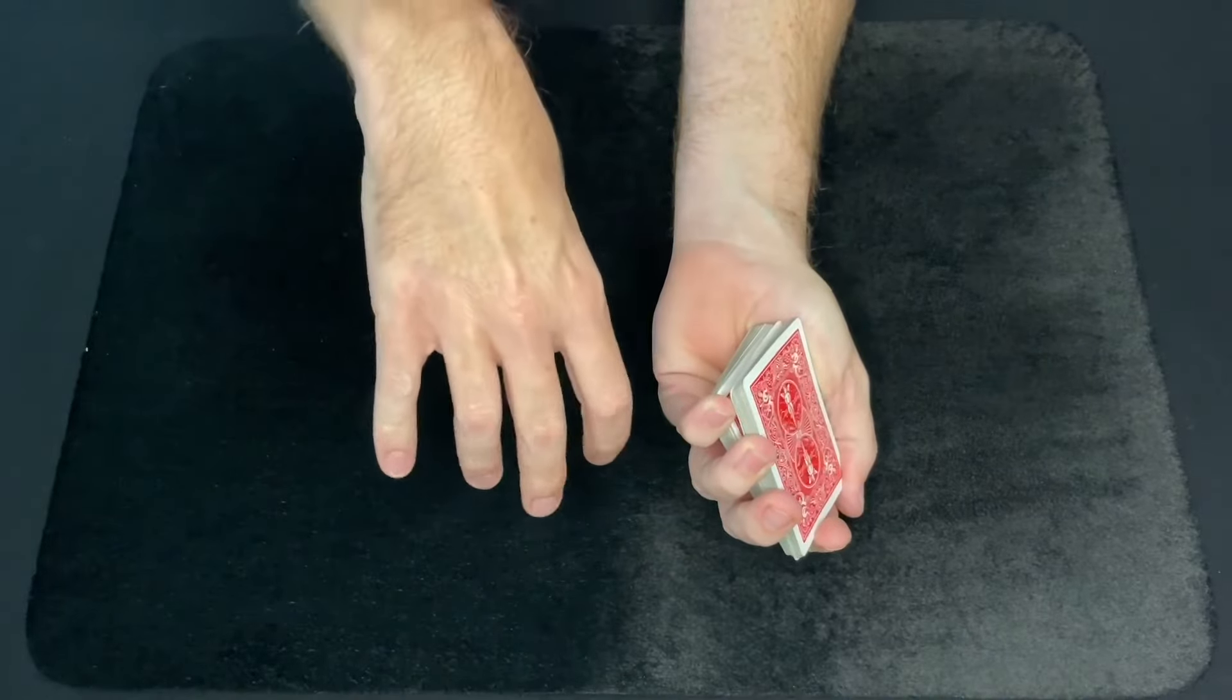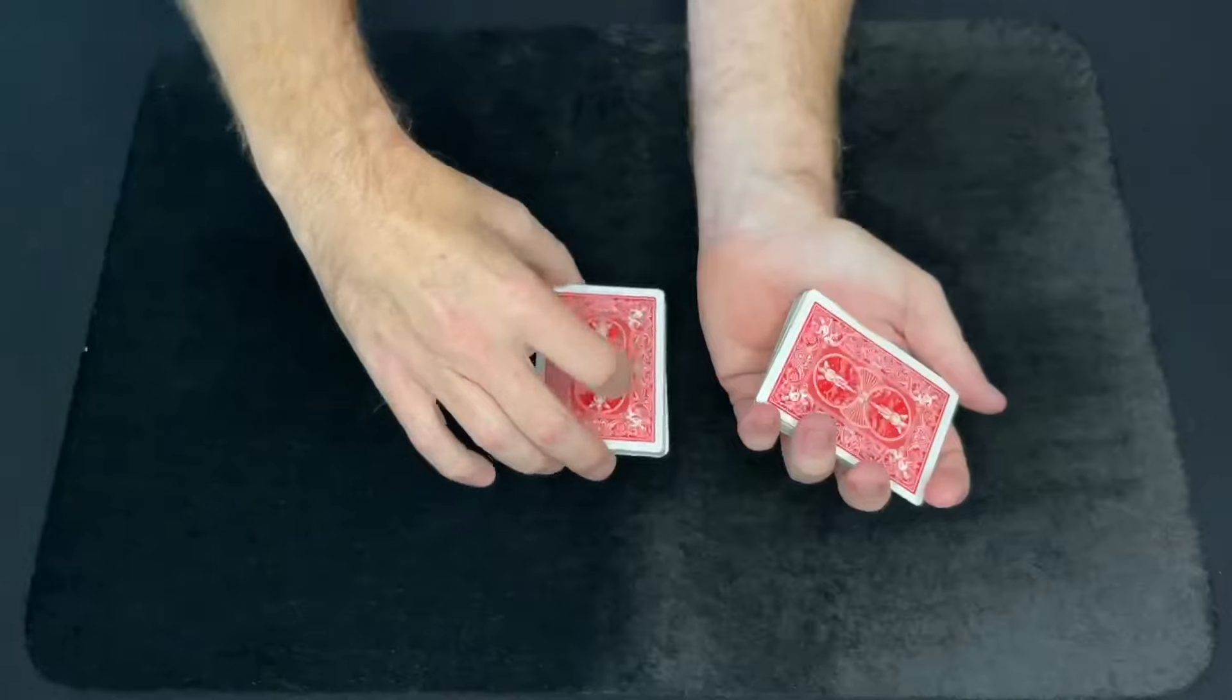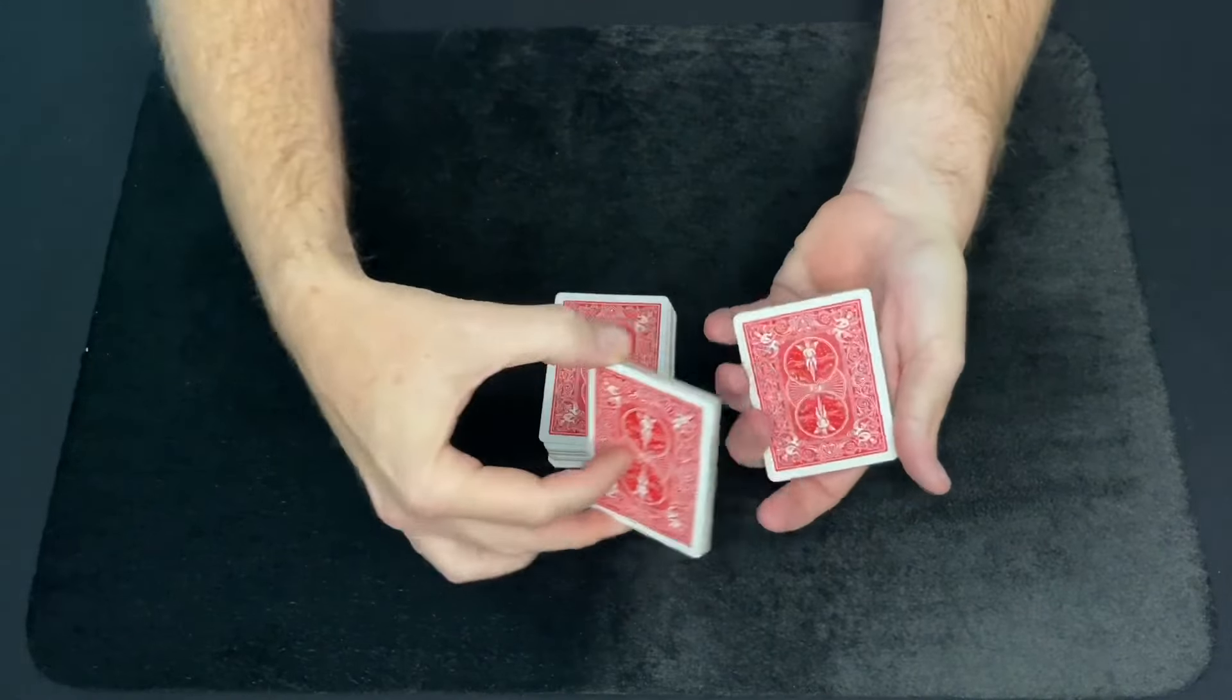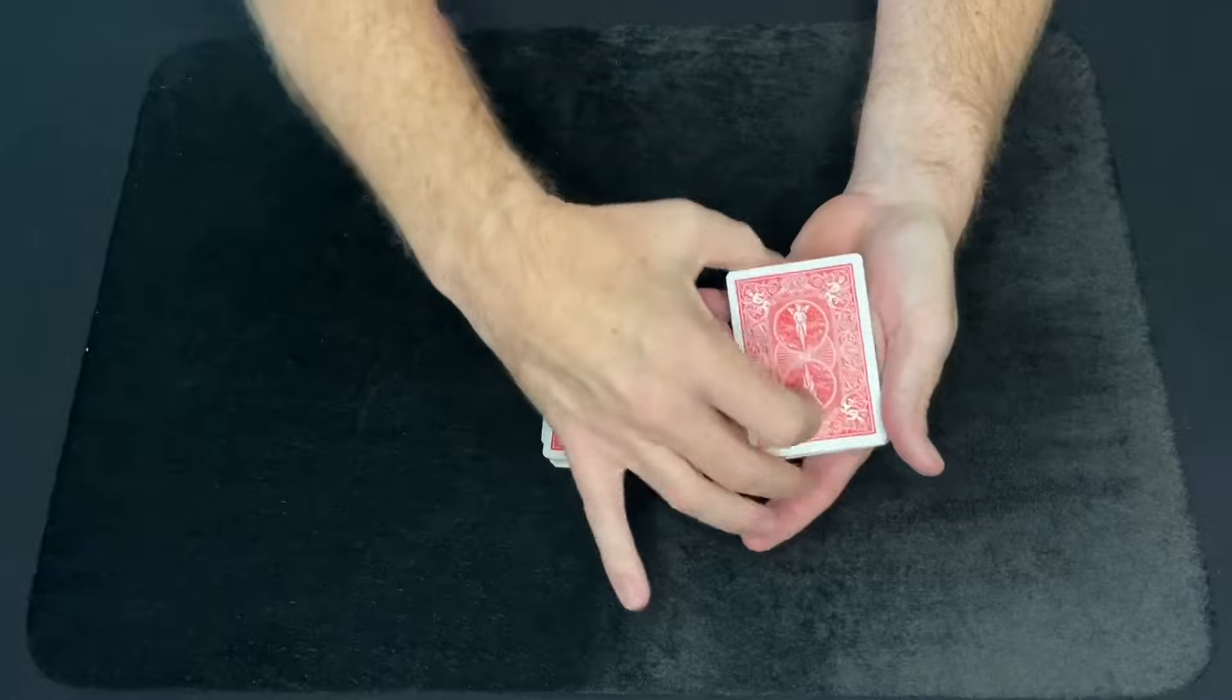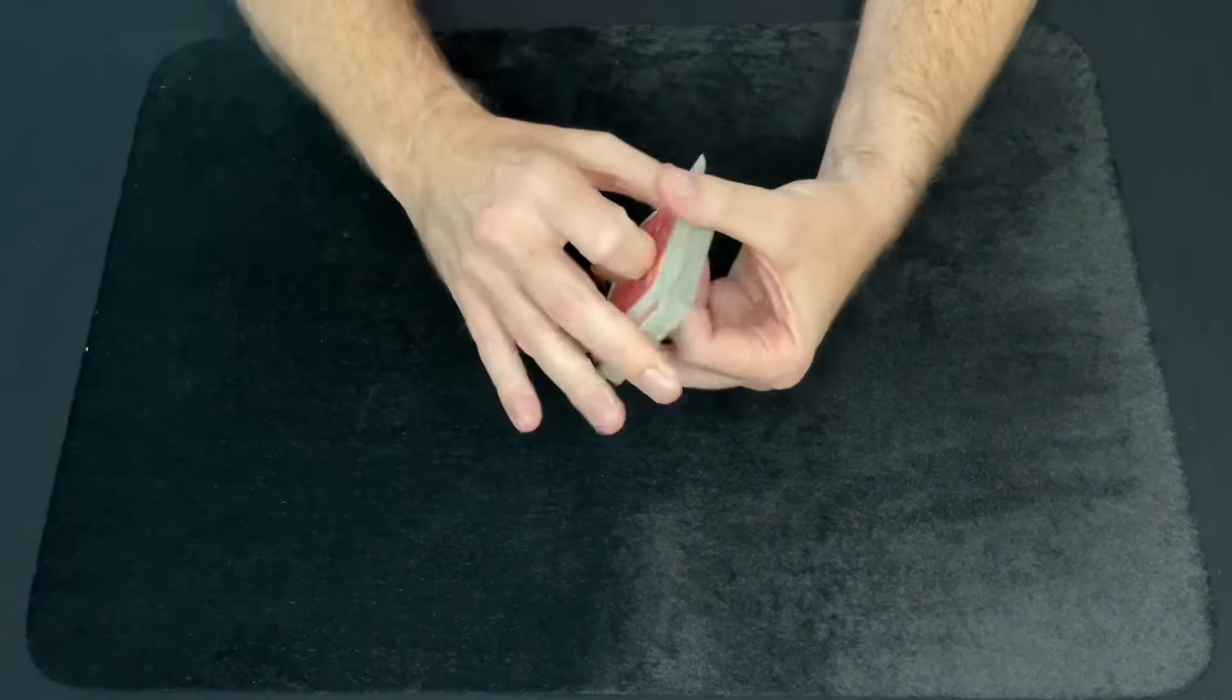Now, when you go to cut the cards, just take this stack where your break is, place them on the table first, then just place about half of this other stack on top, and then the rest of the cards on top of that. Now their selected card is on the bottom.